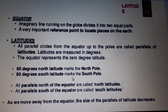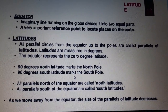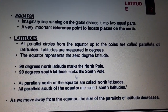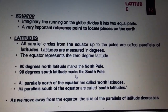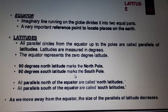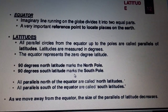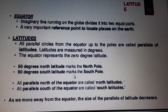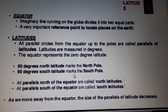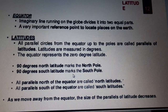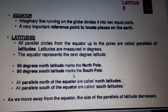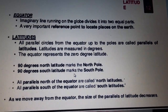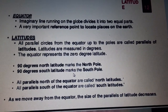I know that you all are aware about the word equator. It means equal half. It is an imaginary line running on the globe that divides it into two equal parts — the northern hemisphere and the southern hemisphere. It is a very important reference point to locate places on the Earth. The equator is denoted as zero degrees.